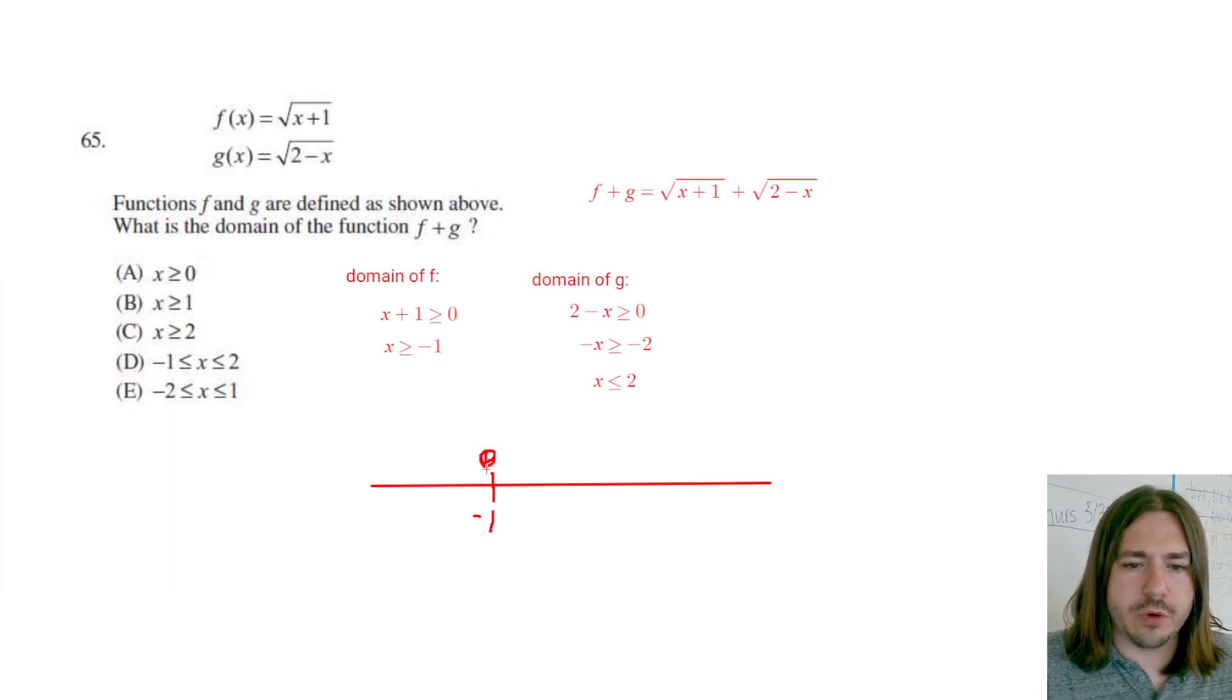All of, you know, negative 1 is going to be part of the domain, and then every number bigger than 1 is also going to be part of the domain. Here's 0, just for some reference. Now for g, so just to label this, here's f. It's the domain of f represented on this number line.